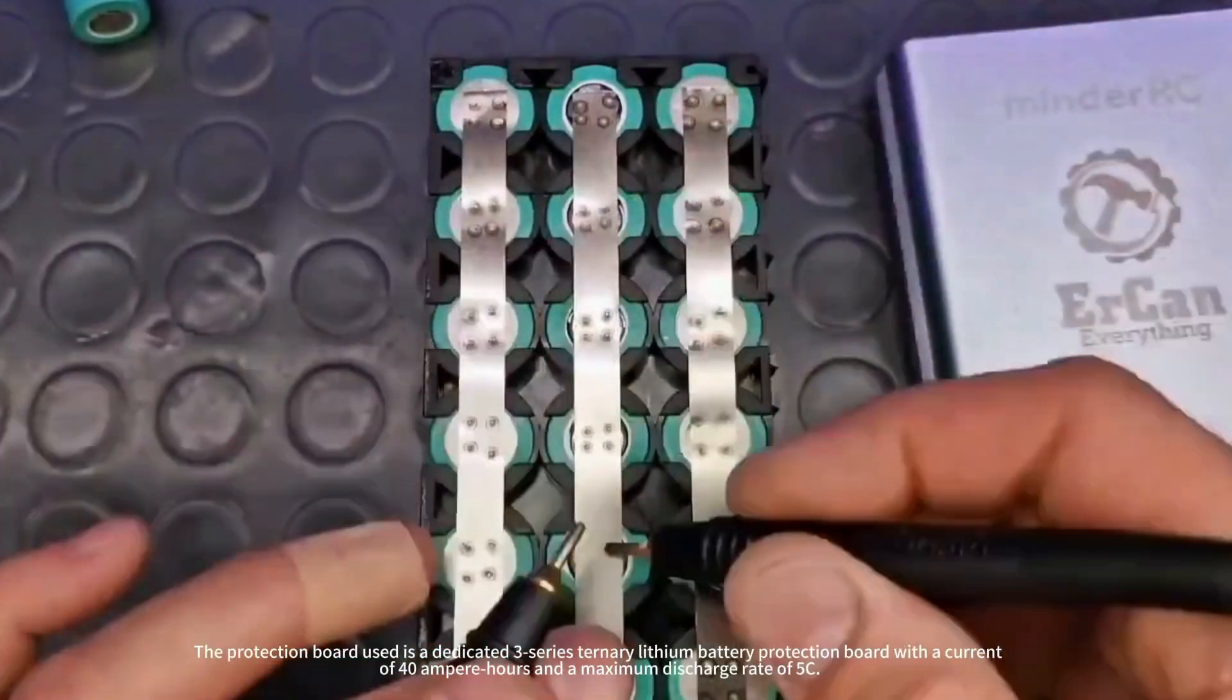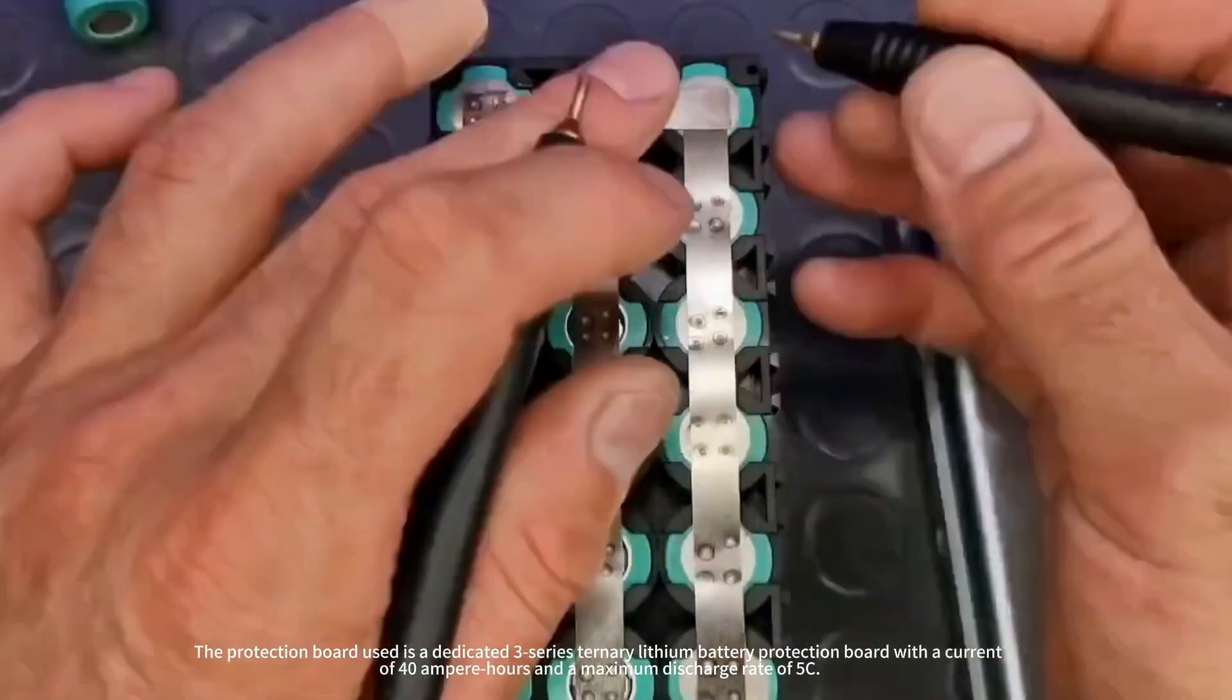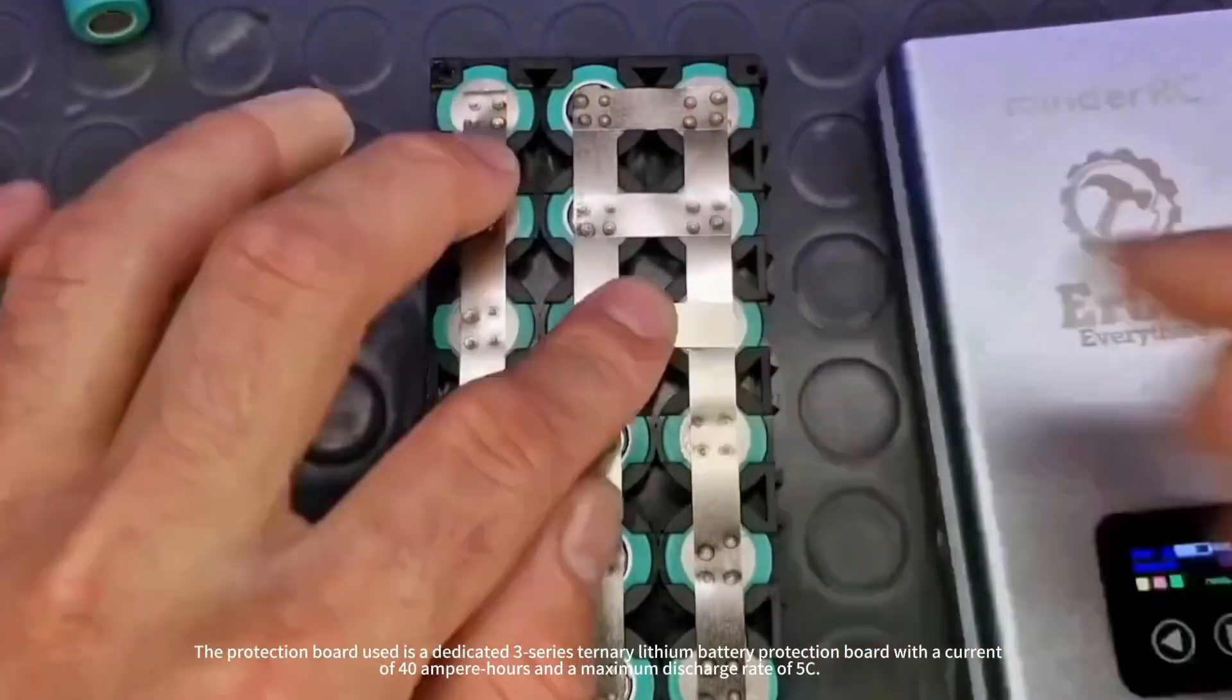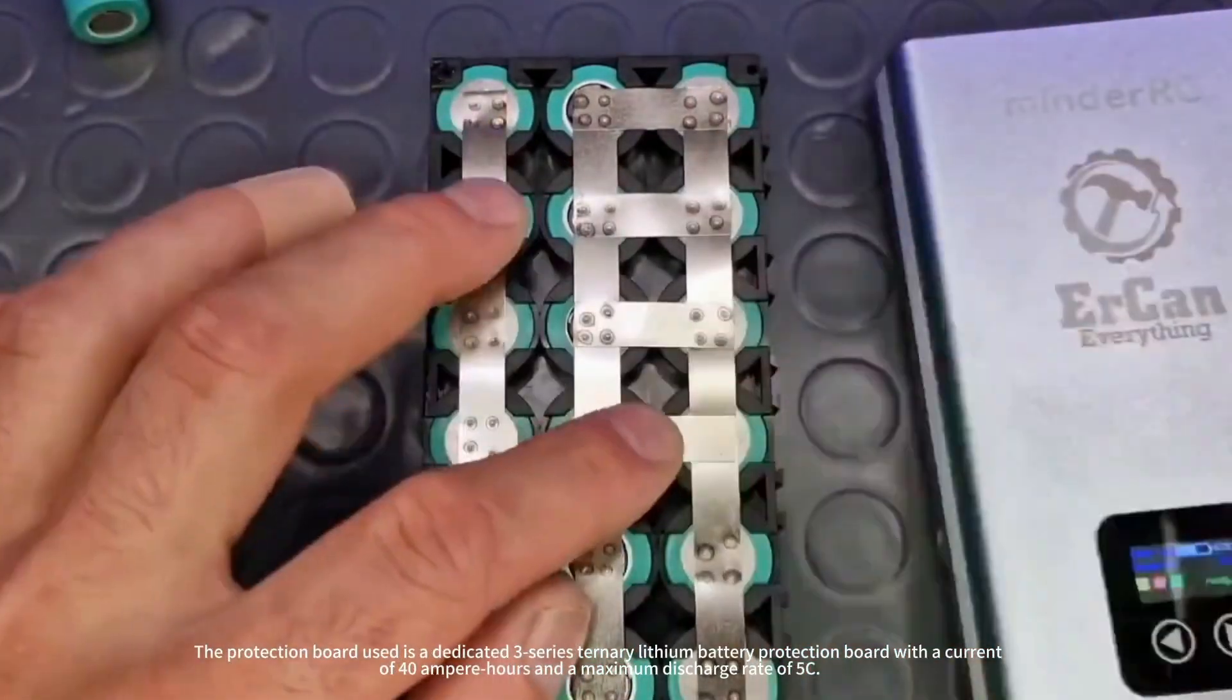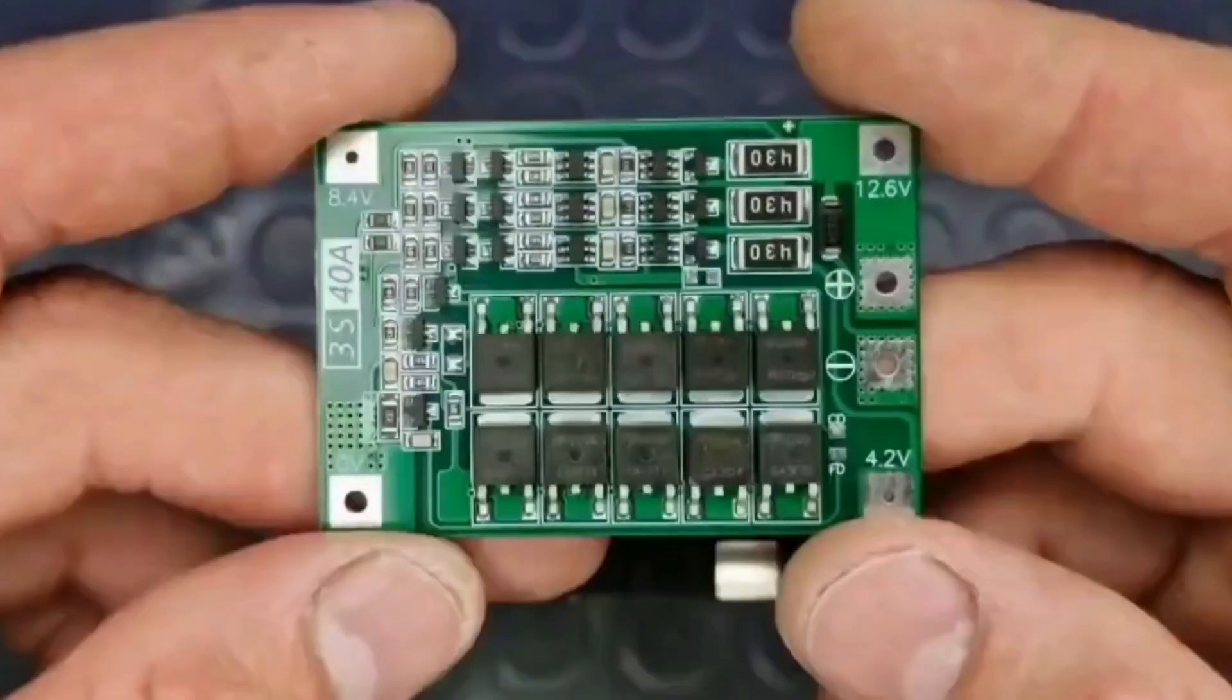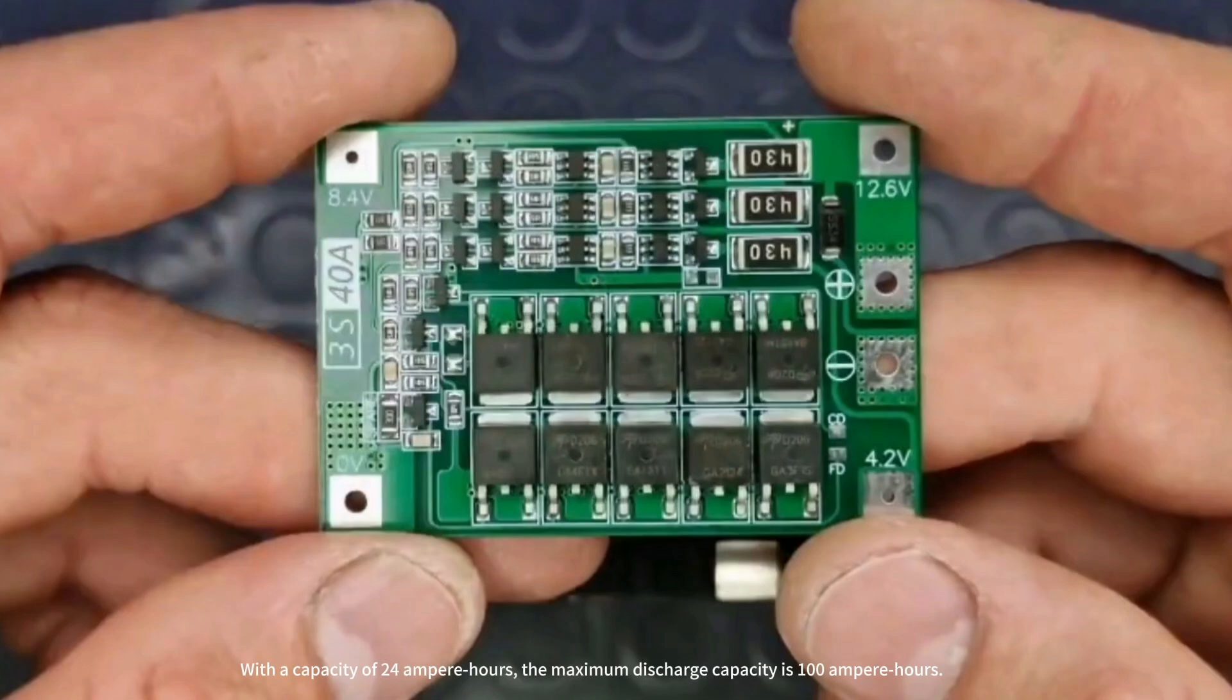The protection board used is a dedicated 3-series ternary lithium battery protection board, with a current rating of 40 amperes and a maximum discharge rate of 5C. With a capacity of 24 ampere-hours, the maximum discharge current is 100 amperes.